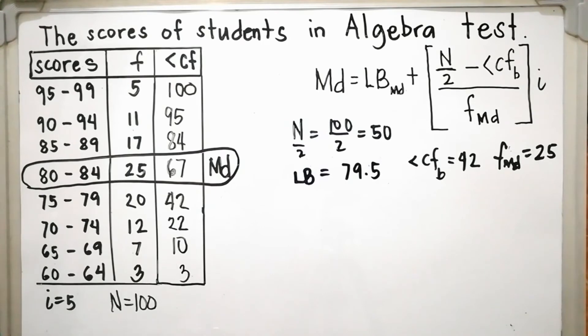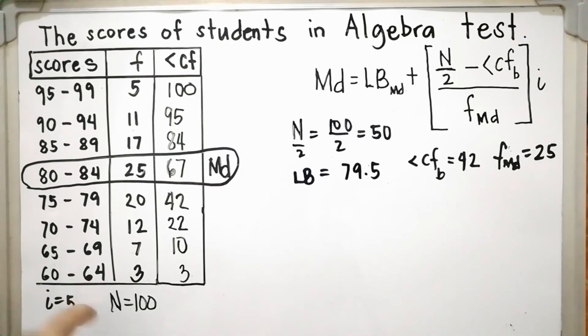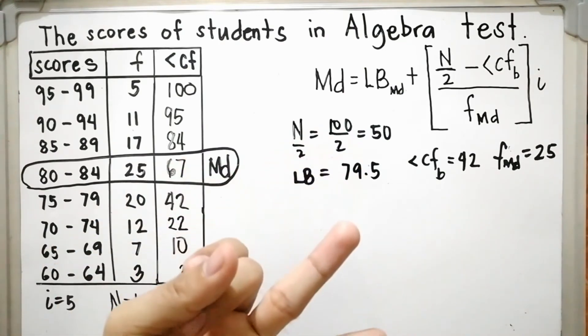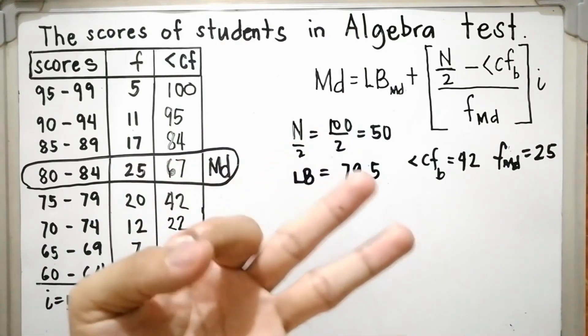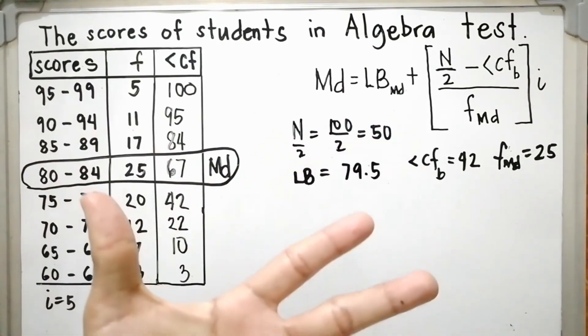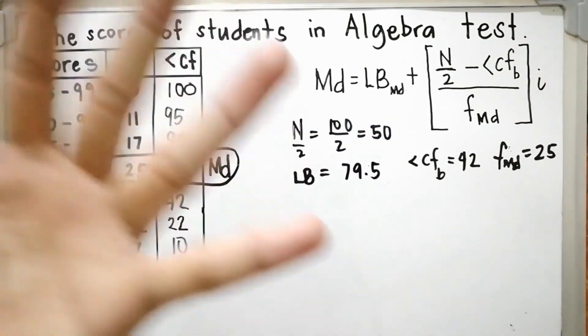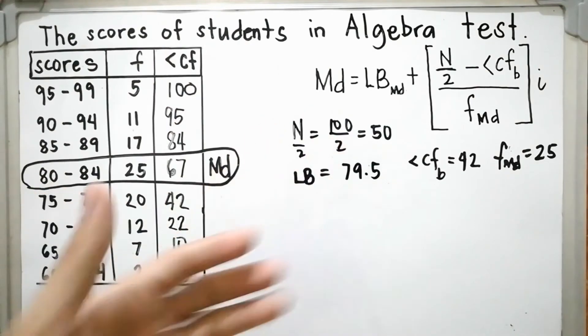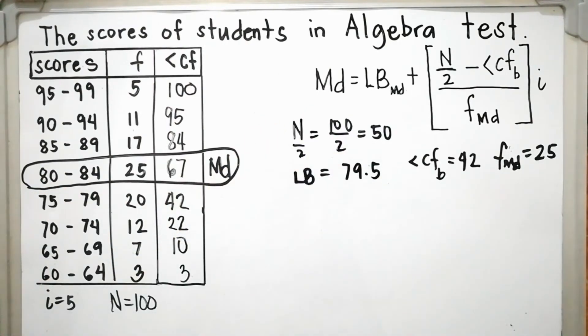You can also count the scores within a class: 60, 61, 62, 63, 64 — that confirms I is equal to 5.